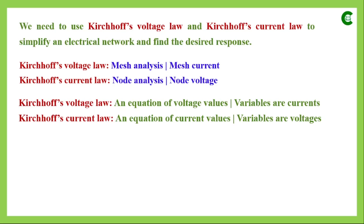The resistance or impedance value will be constant; the only variable will be the current value that flows through that element. So when we apply KVL, the equation we form has variables that are currents, even though it is an equation of voltage values. Similarly, in case of Kirchhoff's current law or KCL, we form an equation of current values where the variables are basically the voltage values.